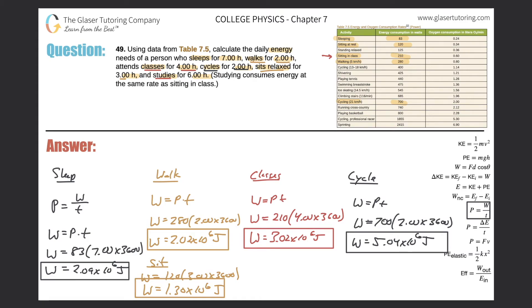Finally, studying for six hours. Since studying consumes energy at the same rate as sitting in class, the work equals 210 watts multiplied by six hours times 3,600. The work for studying is 4.54 times 10 raised to the sixth joules.